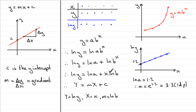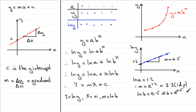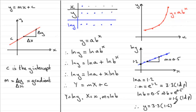As for b, we know the natural log of b is the gradient. We take two points, draw a triangle, and work out the gradient. Suppose the gradient m turns out to be 0.5 — then the natural log of b equals 0.5, so b equals e to the power 0.5, which gives 1.6 to one decimal place. So the relationship is y equals 3.3 times 1.6 to the power x.